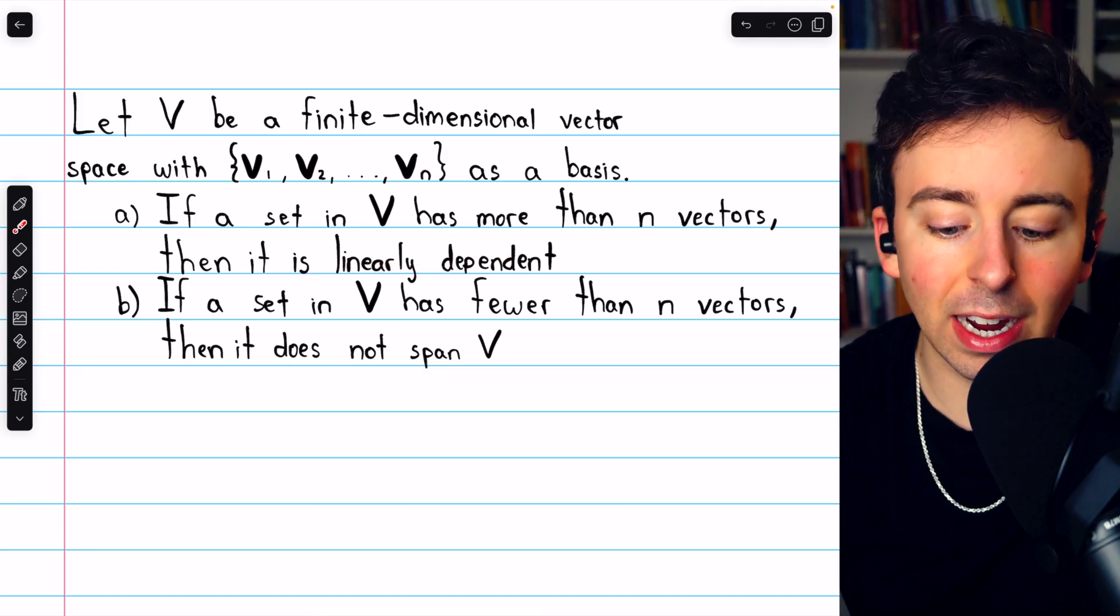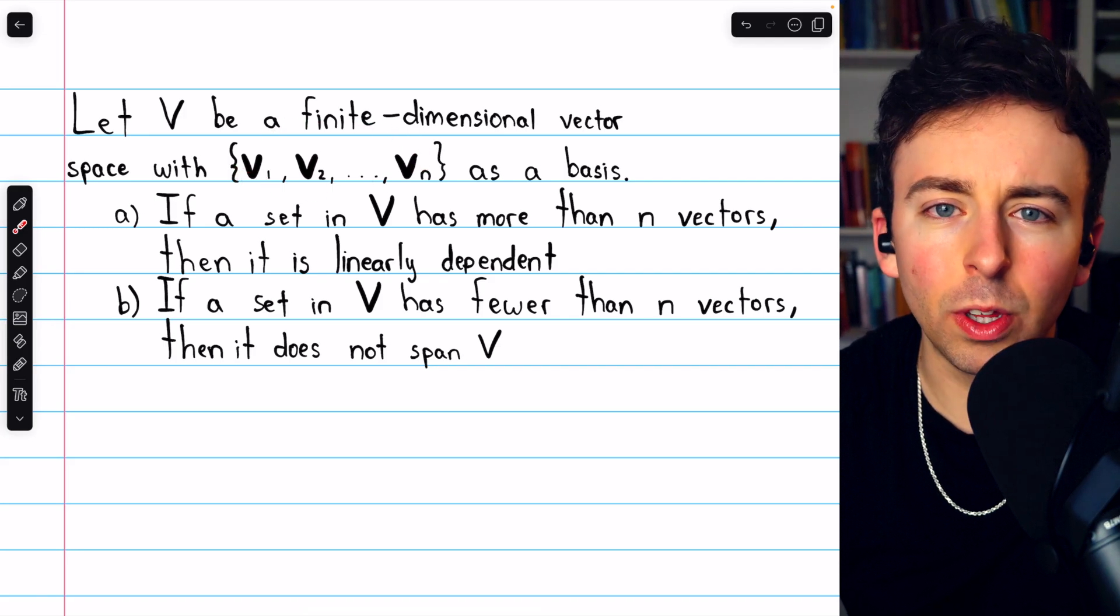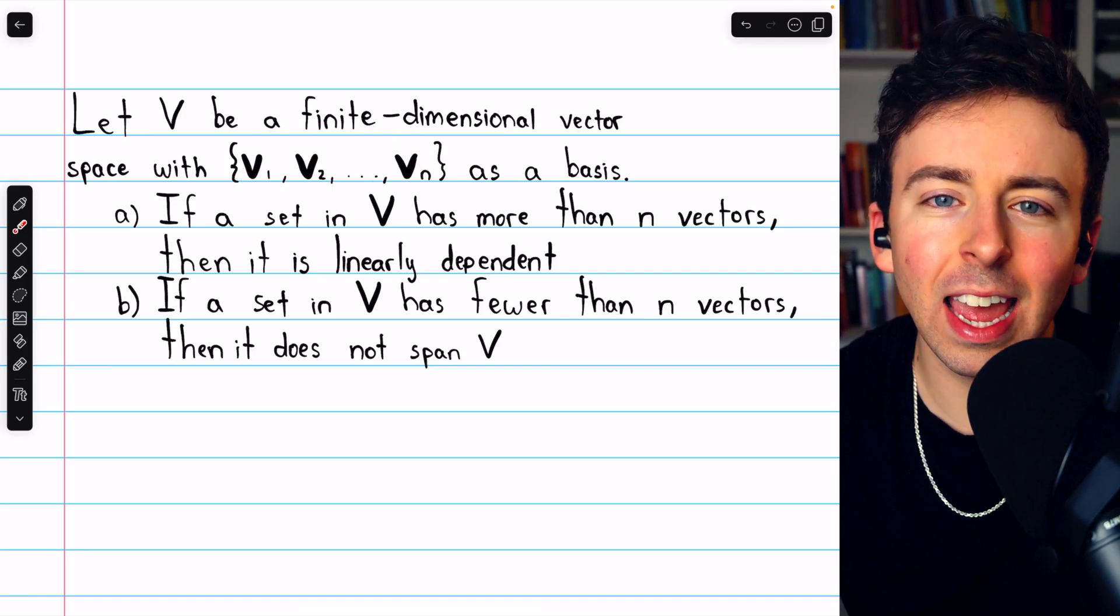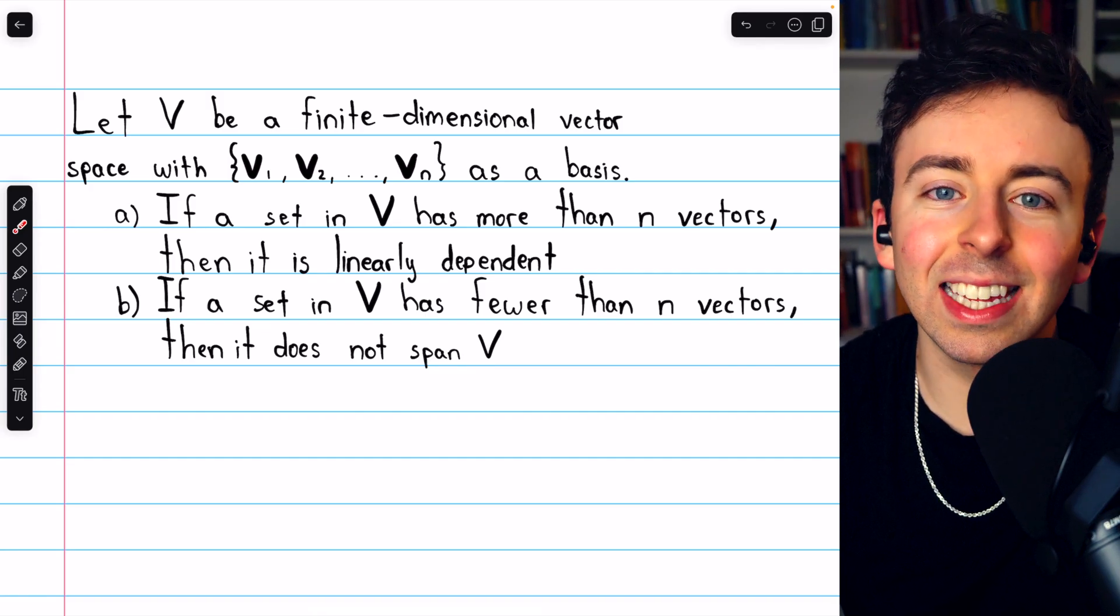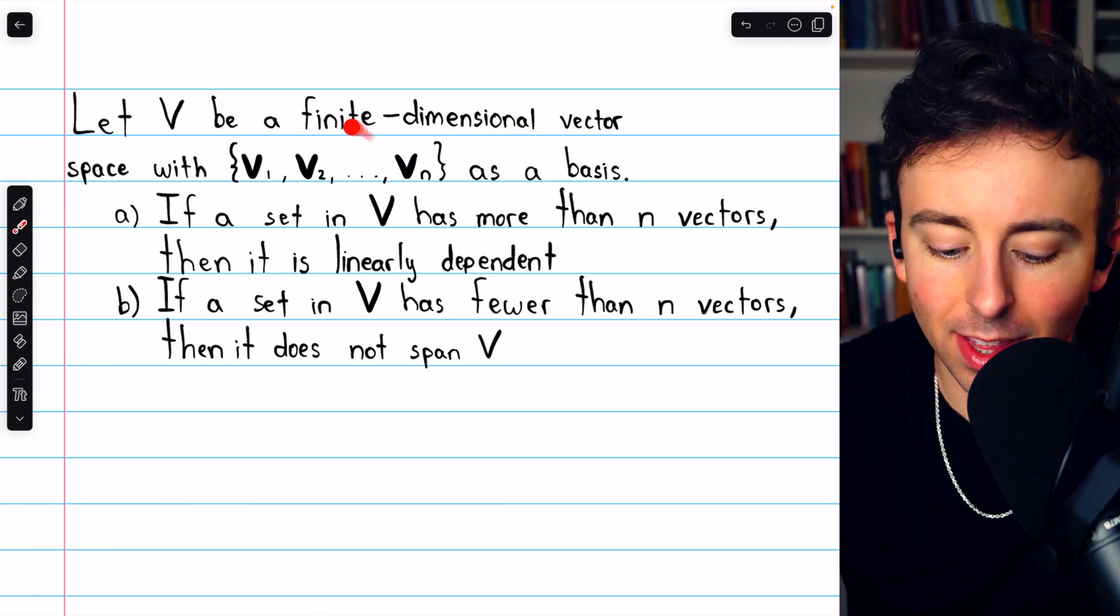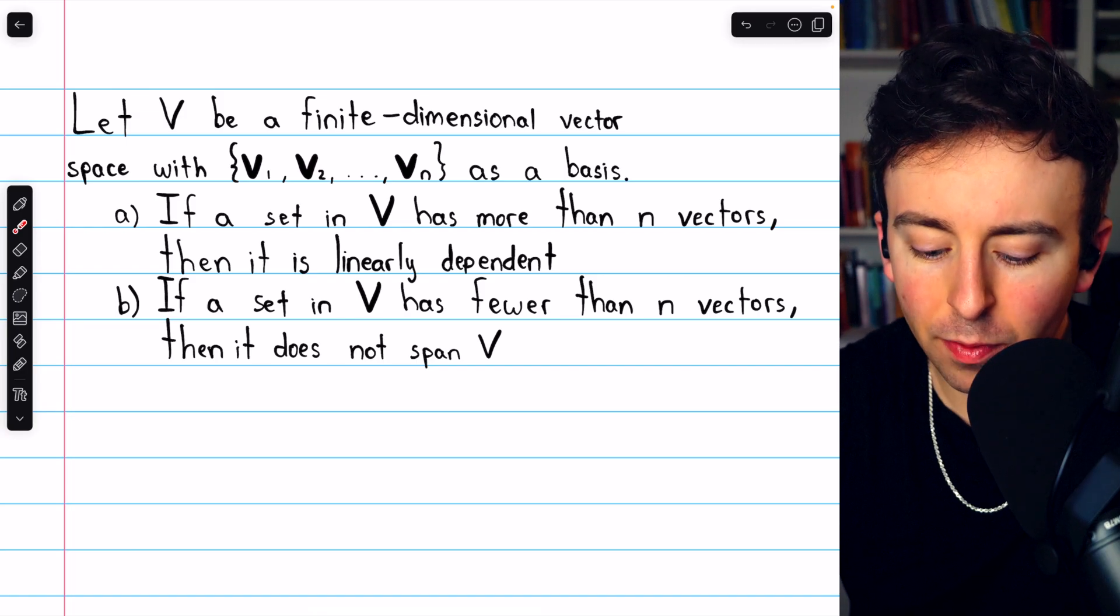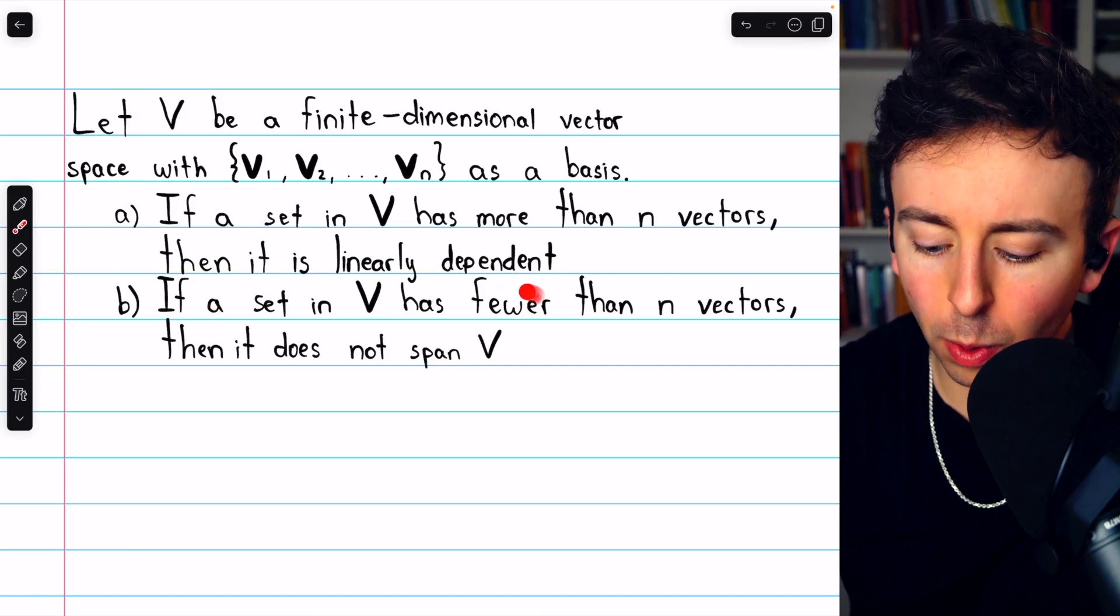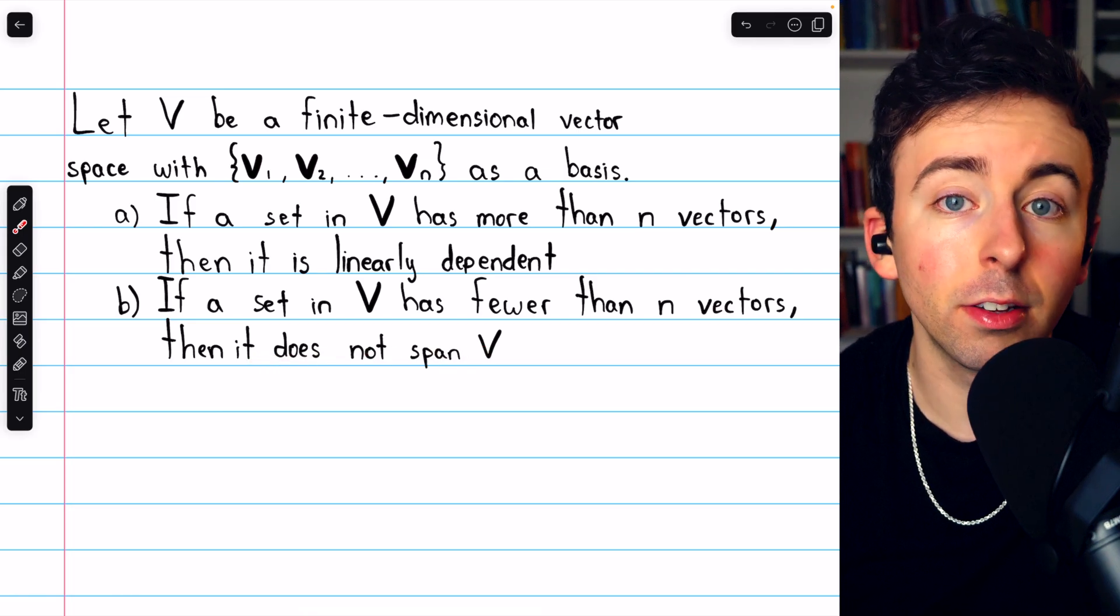If a basis for a vector space has n vectors, then any set with more than n vectors can't possibly be linearly independent. If there were n linearly independent vectors in the space, there's no way that the n vectors in the basis could span it. Secondly, if a set in V has fewer than n vectors, that set does not span the space.